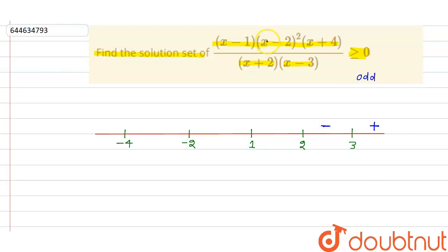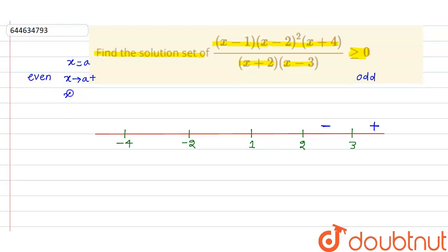The power of (x minus two) is even. When the power is even, as x tends to a from the positive side and from the negative side, the sign will not change. So if it is minus, it will remain minus — no change.